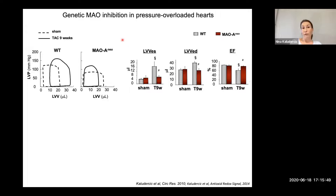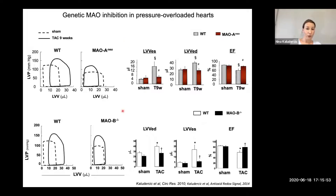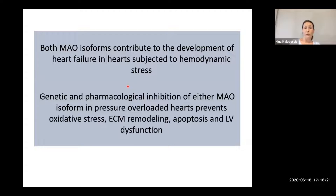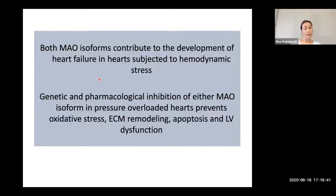Since we have two isoforms of MAO, we also checked MAOB knockout mice. Upon pressure overload, we saw an increase in LV volumes and a decrease in ejection fraction that was almost completely prevented in mice lacking MAOB. It appears that both isoforms contribute to the development of heart failure under hemodynamic stress. When we inhibit either isoform, either genetically or pharmacologically, we can prevent oxidative stress, reduce fibrosis and ECM remodeling, reduce cell death, and improve left ventricular function.